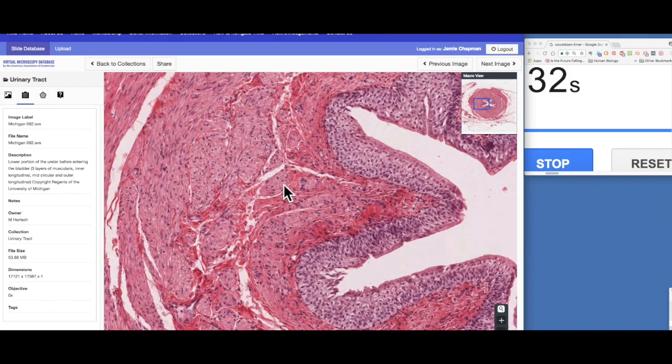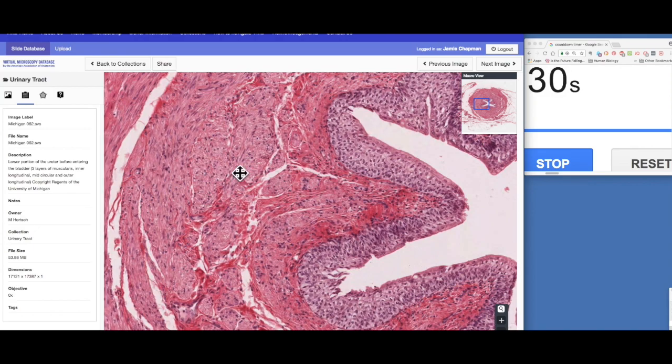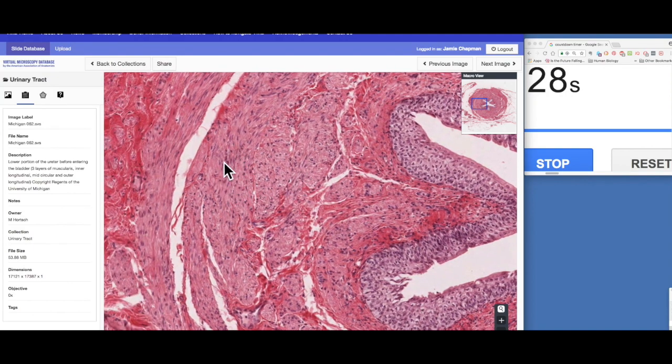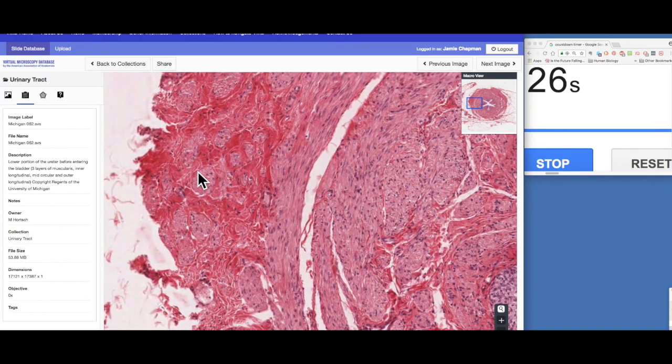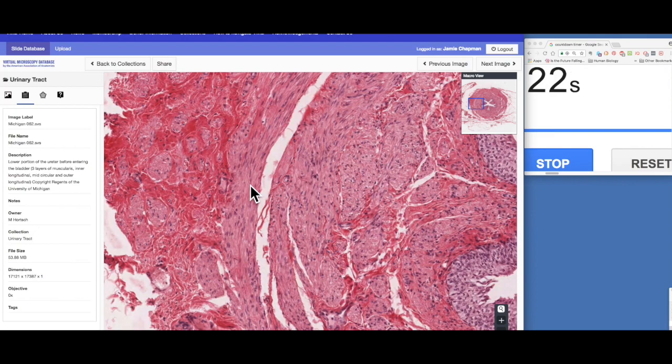So here we've got our inner longitudinal layer of smooth muscle. We come out here, we've got a middle circular layer. And then we come out here again to the outermost, we've got another longitudinal layer. Again, these three layers are very particularly localized just close to the urinary bladder because the urinary bladder also has three layers of smooth muscle in this similar arrangement.